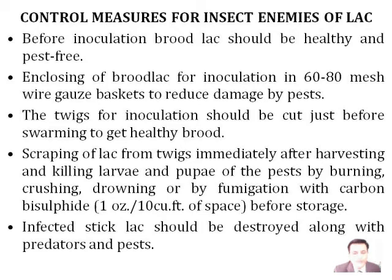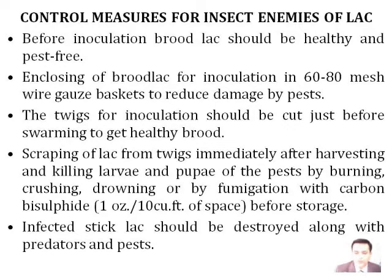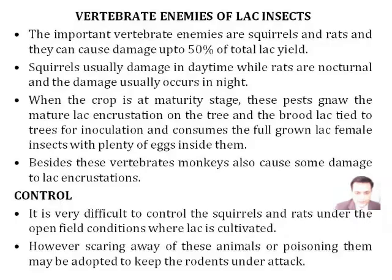Control measures for insect enemies of lac: before inoculation, proper brood lac should be observed — it should be healthy and pest free. The enclosing of brood lac for inoculation is covered in 60 to 80 mesh wire gauze baskets to reduce pest damage. The twigs for inoculation should be cut just after swarming to get healthy brood. Scrapping of lac from twigs is done immediately after harvesting, and killing of larva and pupa of the pest is done by burning, crushing, drowning, or fumigation with carbon bisulphide. Before storage, infected stick lac should be destroyed along with the predators and pests.